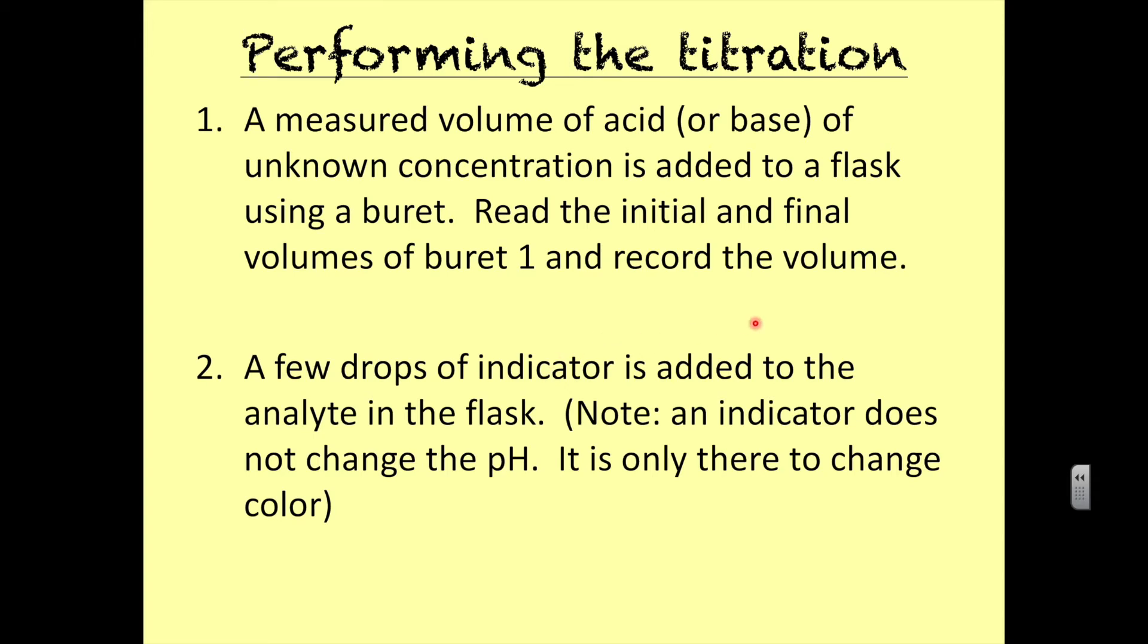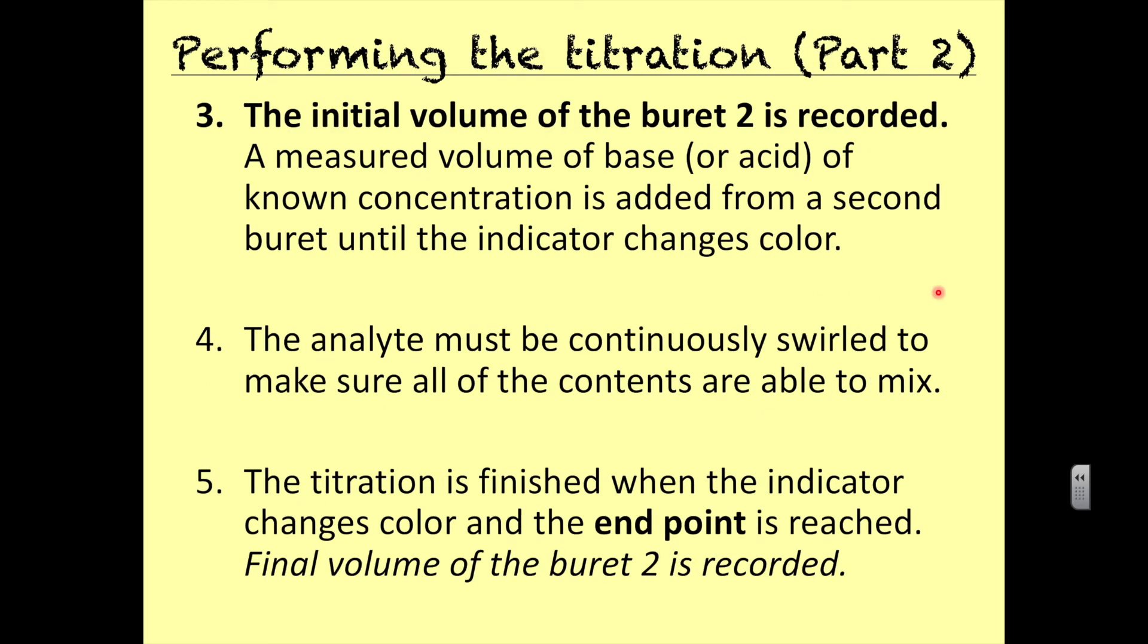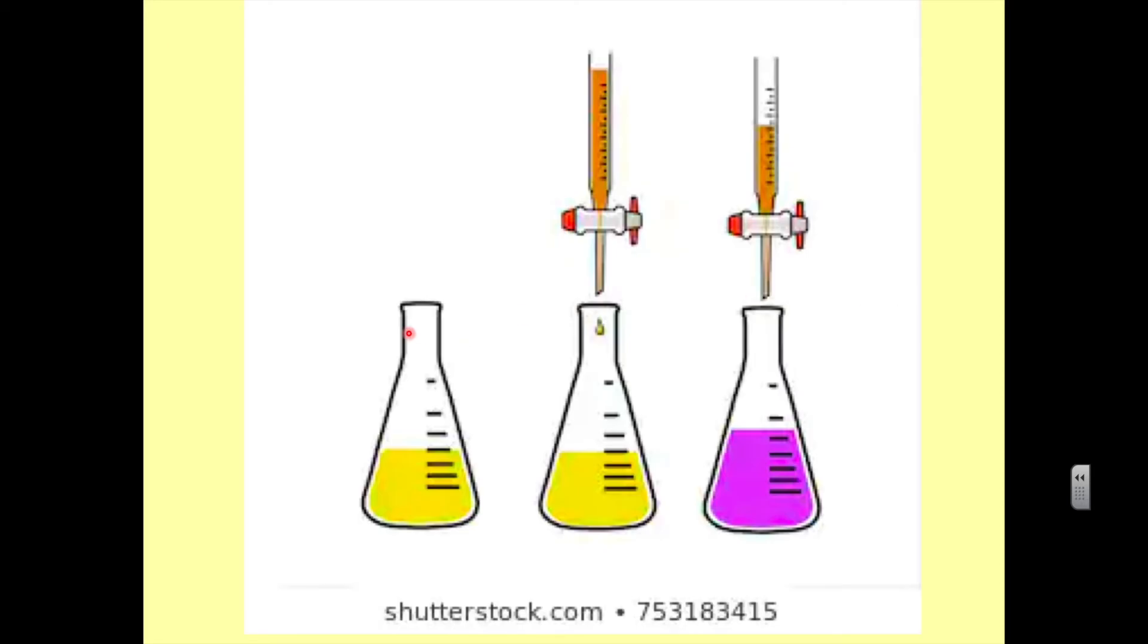When we perform the titration, we are going to measure the volume of what's in our analyte, and we're also going to add some indicator. It's going to make it a very bright, vibrant color. We'll get to more on choosing the proper indicator. Normally we'll have our burette - normally this is very colorless.